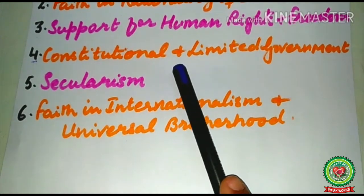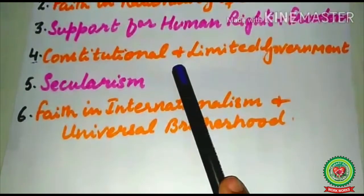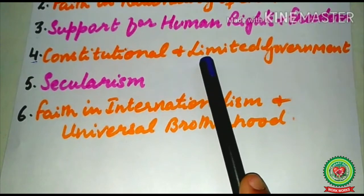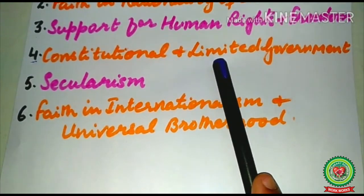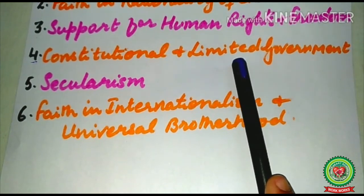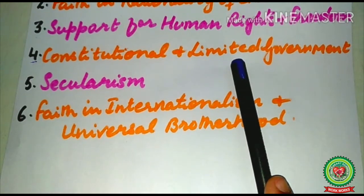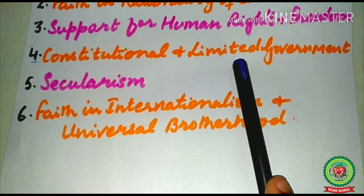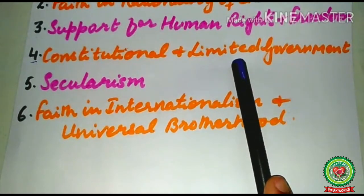Rulers have powers, but they are not to use these powers without limits. Liberalism favors limiting the powers of the government — the government should work within constitutional limits. The Constitution is a set of rules and regulations for the working of the government. Just as we work within the limits of the laws, the government works within the limits of the Constitution.